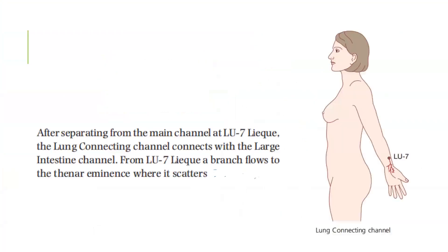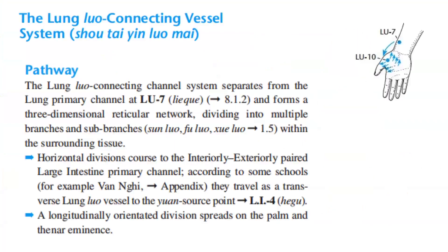After separating from the main channel at lung 7, the lung connecting channel connects with the large intestine channel. From lung 7, a branch flows to the thenar eminence where it scatters.